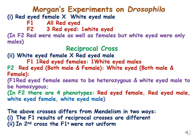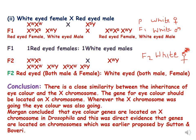The above crosses differ from Mendelism in two ways: the F1 results of reciprocal crosses are different, and in the second cross the F1 were not uniform. Morgan concluded that there is a close similarity between the inheritance of eye color and the X chromosome, and that the genes for eye color are located on the X chromosome. This was direct evidence that genes are located on chromosomes, as earlier proposed by Sutton and Boveri.